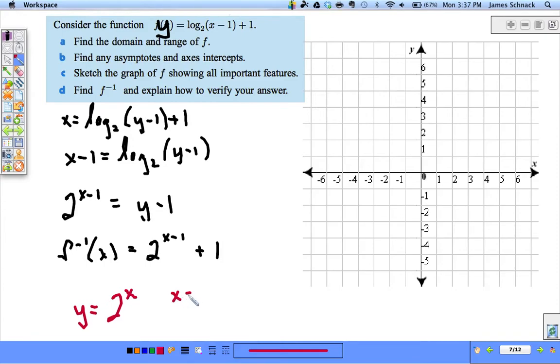When X is 0, Y is equal to 1. When X is 1, Y is equal to 2. I'm just plugging those things in. So my graph would go through these. It would have a horizontal asymptote on the X axis.